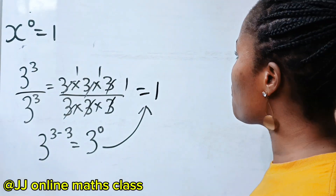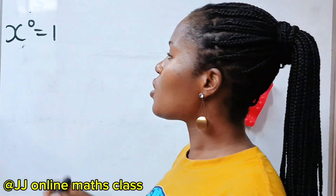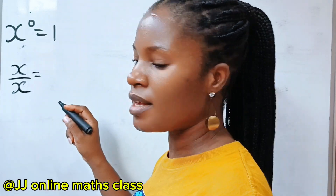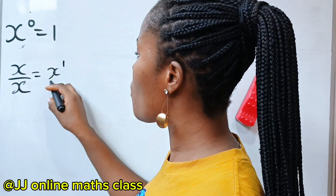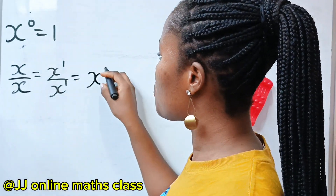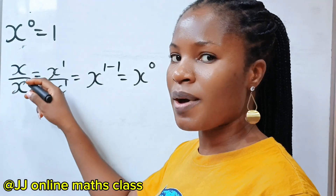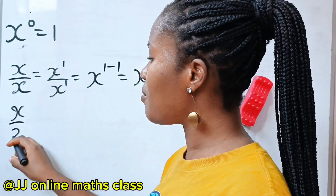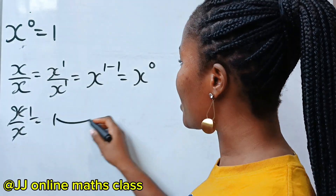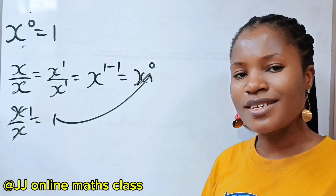Now if we decide to use x, where x stands for any number at all. So if we say x divided by itself, this is the same thing as x to the power of 1 divided by x to the power of 1, which is equal to x to the power of 1 minus 1, which is equal to x to the power of 0. Now if we use the expansion method, x divided by x is simply x dividing itself to give us 1. So x to the power of 0 is equal to 1. And that is just it.